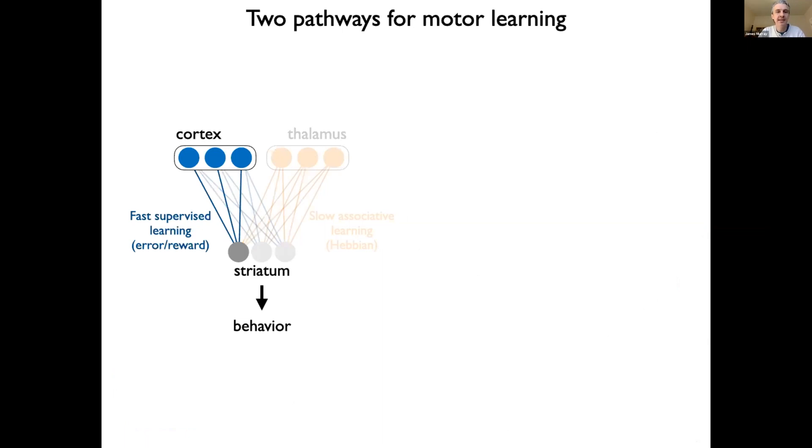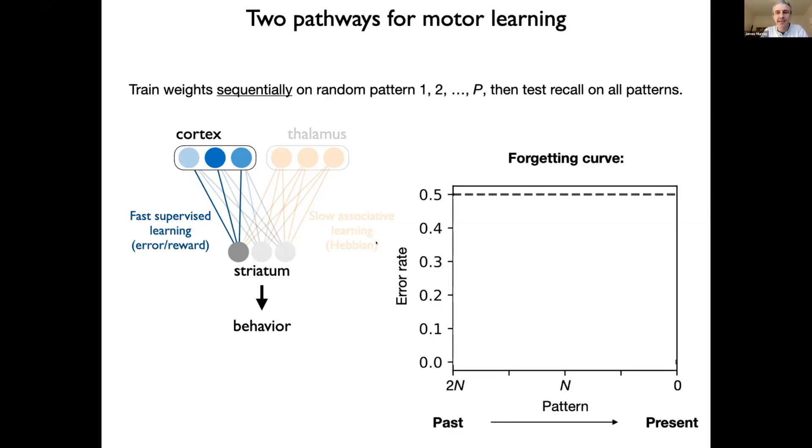So let's start with the very simplest version of this theory. This is a perceptron. Basically, it's a single neuron in striatum with a binary state, and it's getting inputs from cortex. And the task we want to solve is let's take a random pattern in cortex and ask striatum to produce some output, either zero or one. And we will update these synaptic weights in order to make striatum produce the correct output for pattern one. And then we'll move on to the next pattern and the third pattern and so on. And we'll train all the patterns sequentially, which means that there's potential for overriding of old information as new information is acquired. And then after training on P patterns, we will test on all those patterns. So we can quantify the behavior with a forgetting curve. And so this is going to plot the error rate, so how likely is this neuron to be wrong in the output that it produces as a function of which pattern we're looking at.